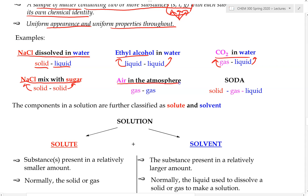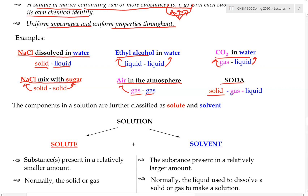Air in the atmosphere is an example of a gas dissolved in gas. There are different gases in air — oxygen, carbon dioxide, nitrogen — mixed together, and that still forms a solution. If we look at soda, this solution consists of multiple substances: sugar (a solid), CO₂ (a gas), and water (a liquid) — so we have solid, gas, and liquid all combined together in one single solution.